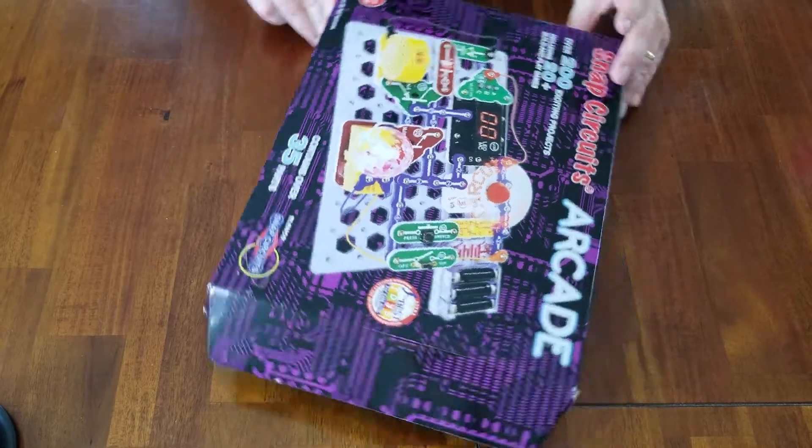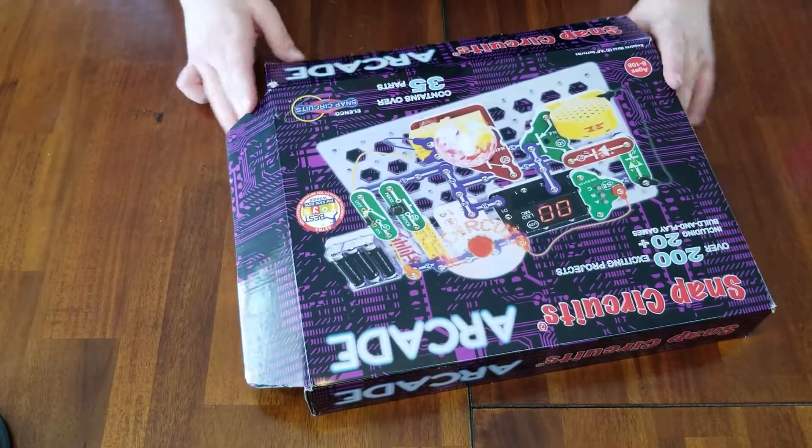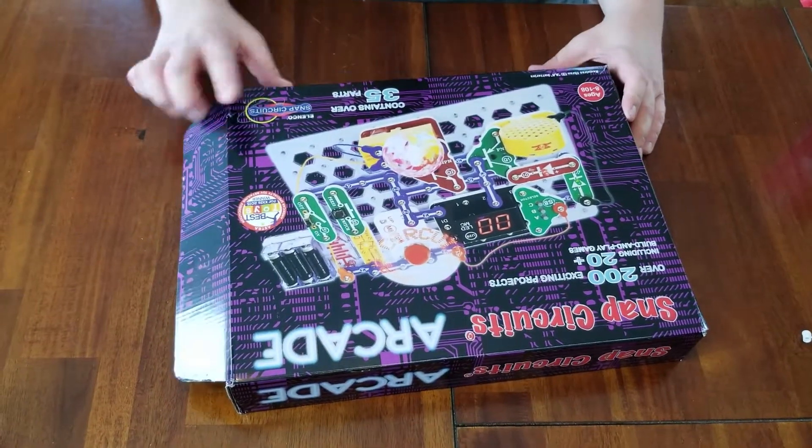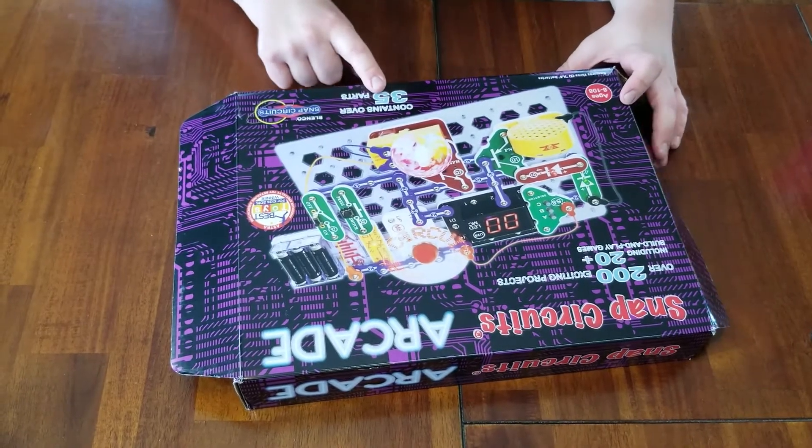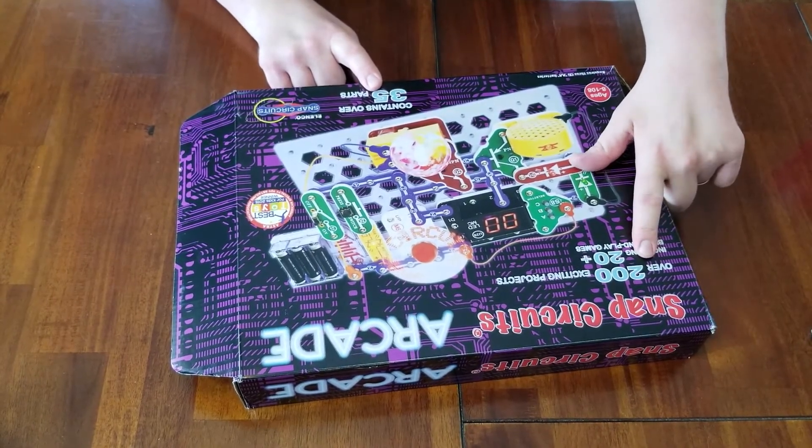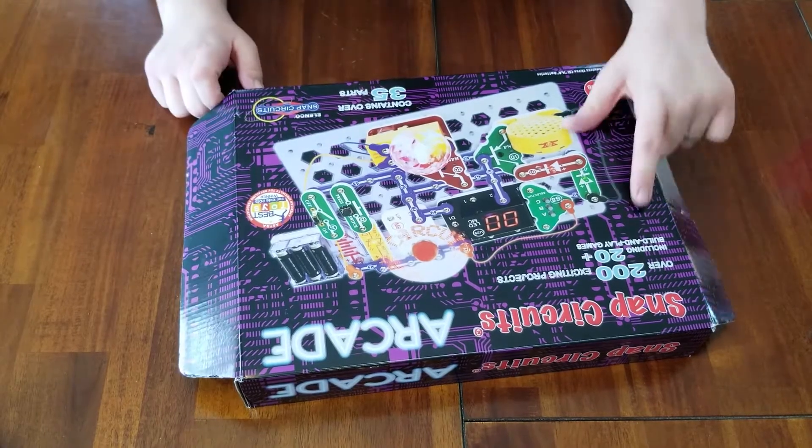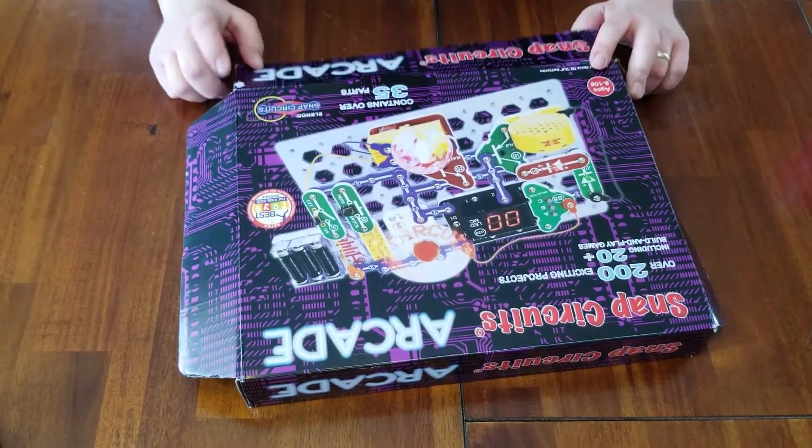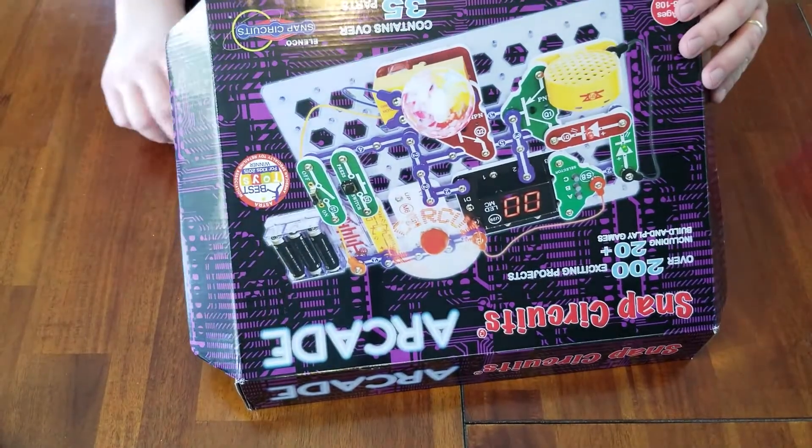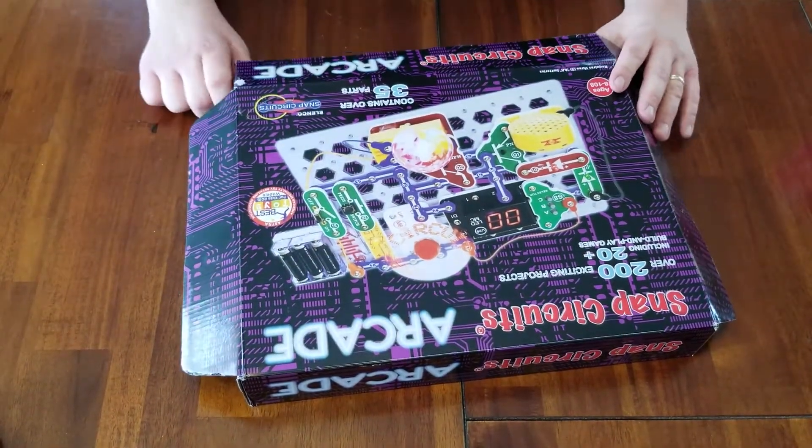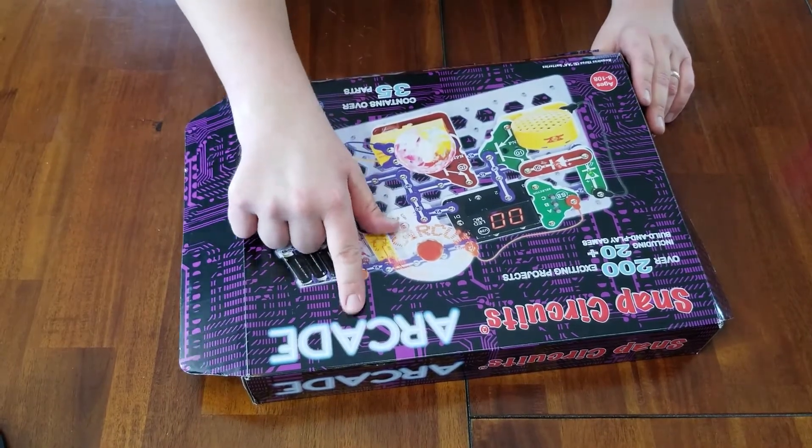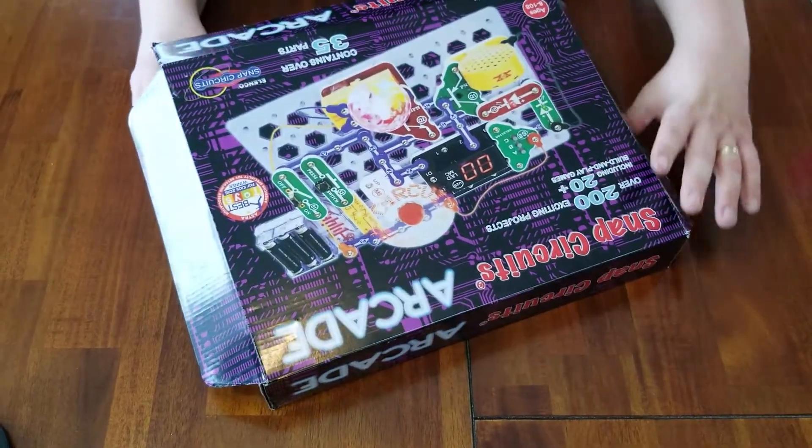So this is the box that it comes in. It has the picture of the Snap Circuits Arcade on the front. Contains over 35 parts and it has a booklet with over 200 projects including 20 plus build-and-play games. They have a whole line of Snap Circuits that you can buy. This one happens to be the arcade, which I think is pretty fun.